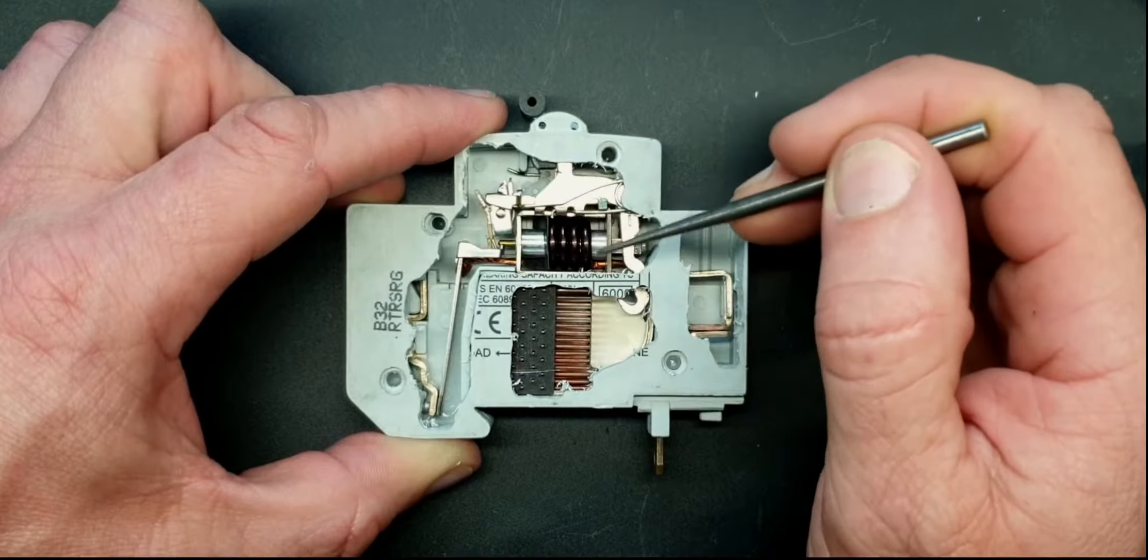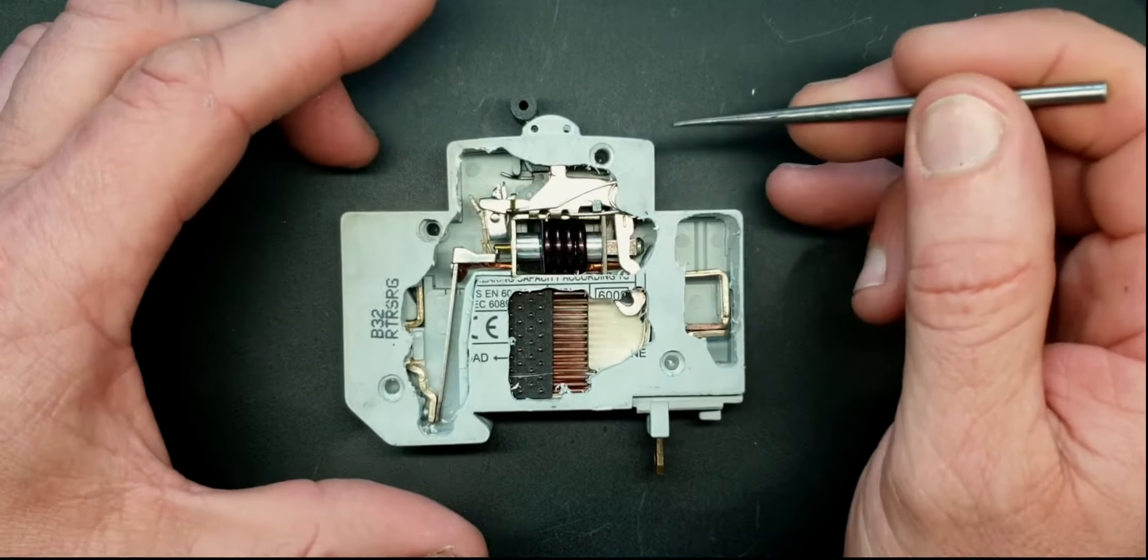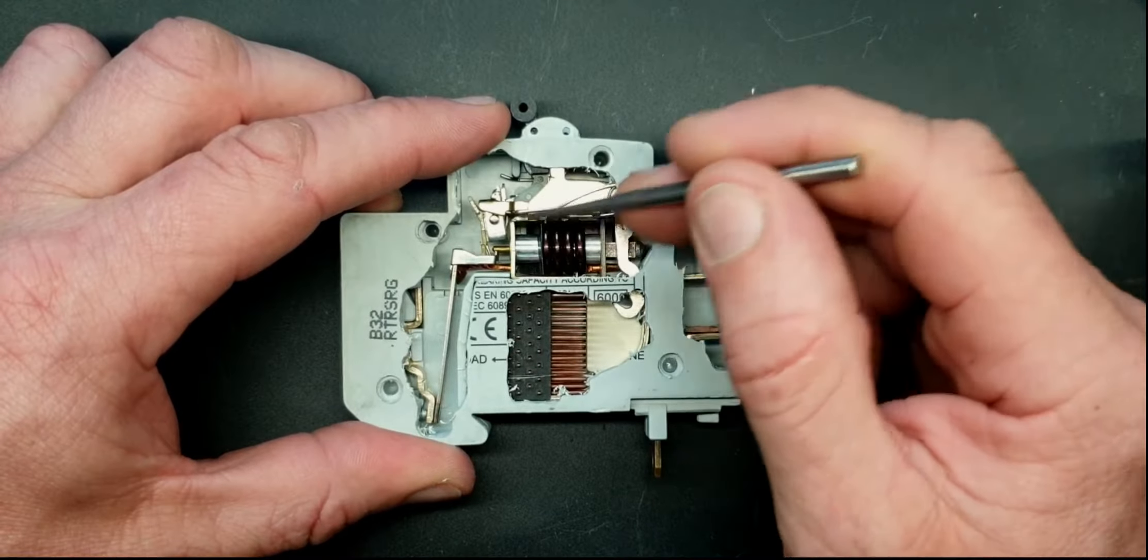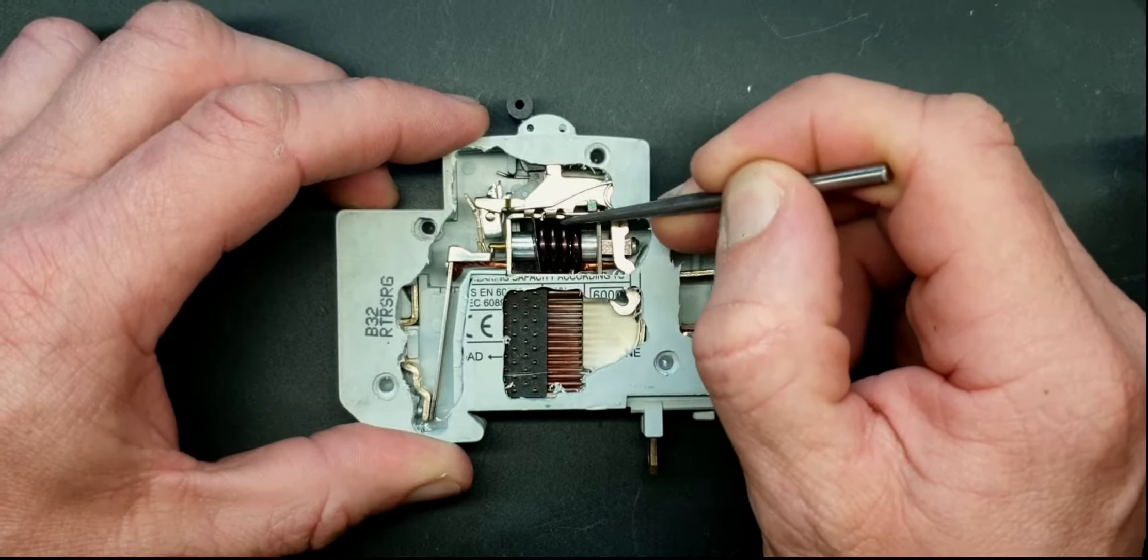The other thing that a circuit breaker can protect against is called a short circuit or an earth fault, it's called an overcurrent fault. That's taken care of by this solenoid in the middle here.